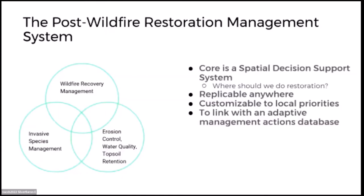Here's something I came up with — the Post-Wildfire Restoration Management System, for lack of a better name. It's a Venn diagram of wildfire recovery management, invasive species management, and erosion control/water quality/topsoil retention, asking the question: where should we do restoration? The system itself is replicable anywhere at multiple scales, customizable to local priorities, and envisioned to link with an adaptive management actions database — possibly a knowledge graph.